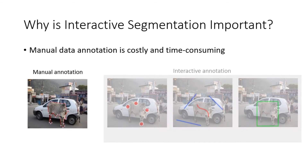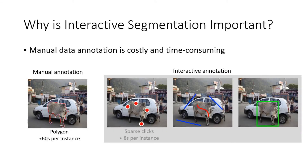Interactive segmentation is extremely useful for tasks such as data annotation, because manual annotation is very slow and costly. For example, annotating with polygons usually takes up to 60 seconds per instance.